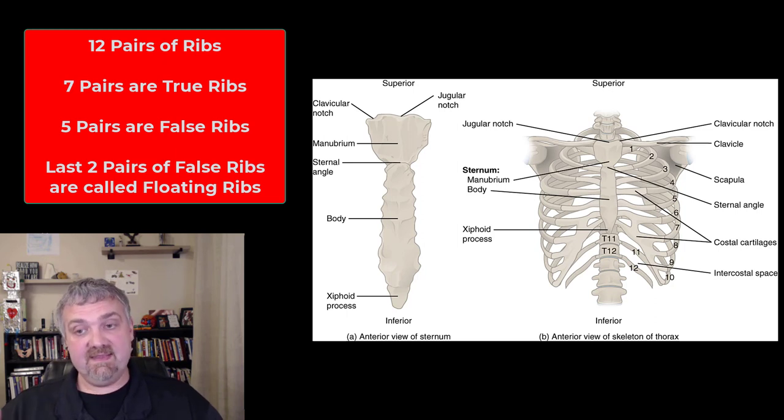Rib one is hidden by the clavicle, so you can't really palpate it very well, but it attaches to the manubrium. Rib two attaches right near that sternal angle. Then ribs three through seven attach right onto the body of the sternum. The first seven pairs of ribs are called true ribs because they attach directly to the sternum.